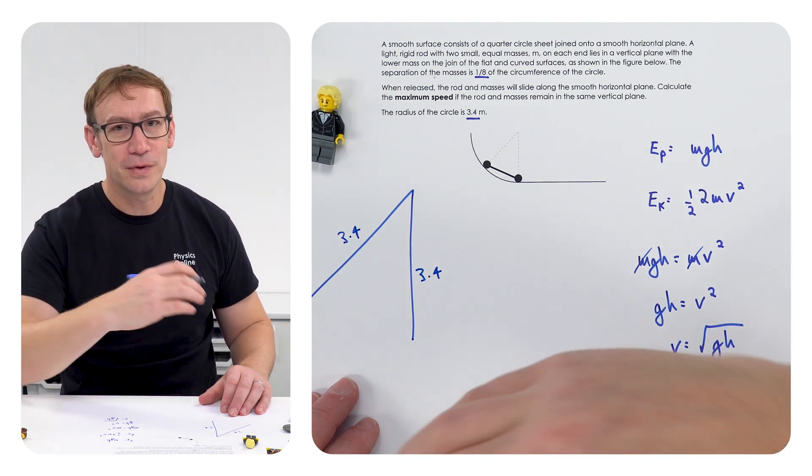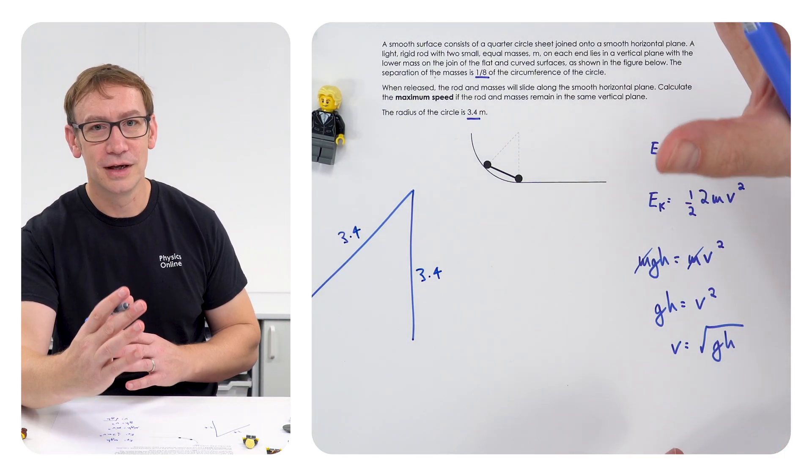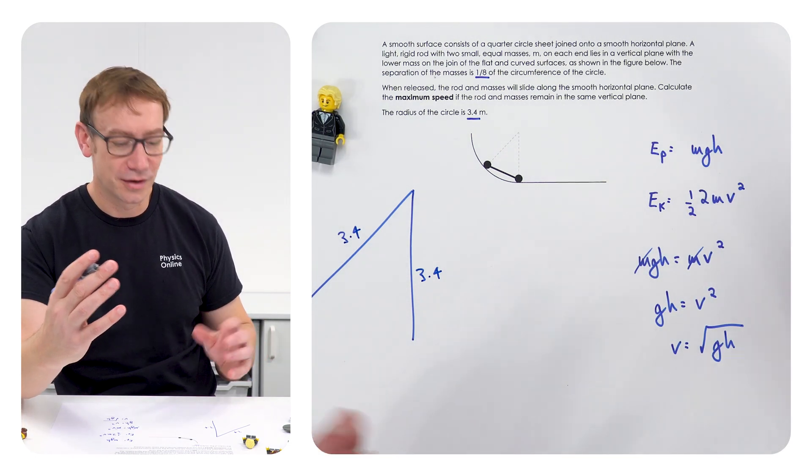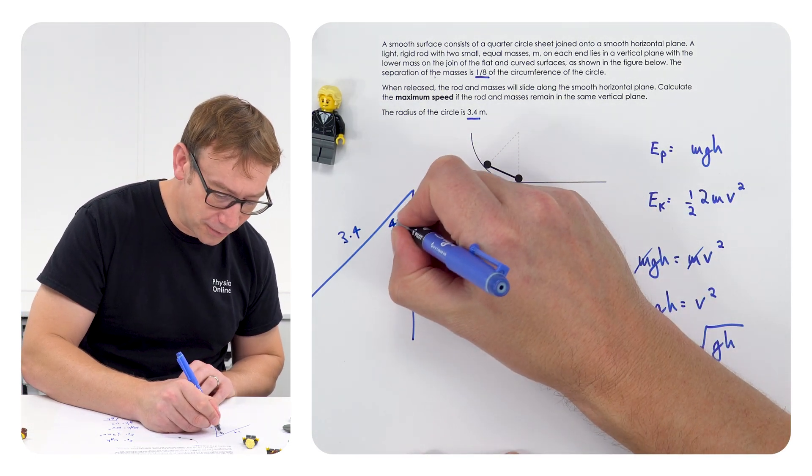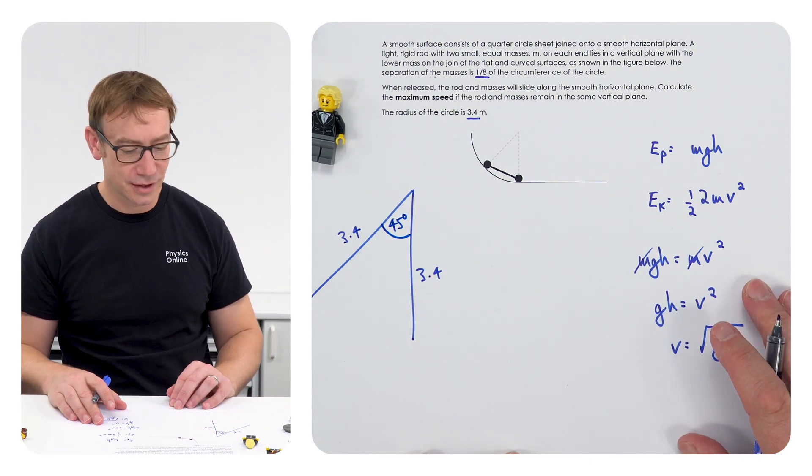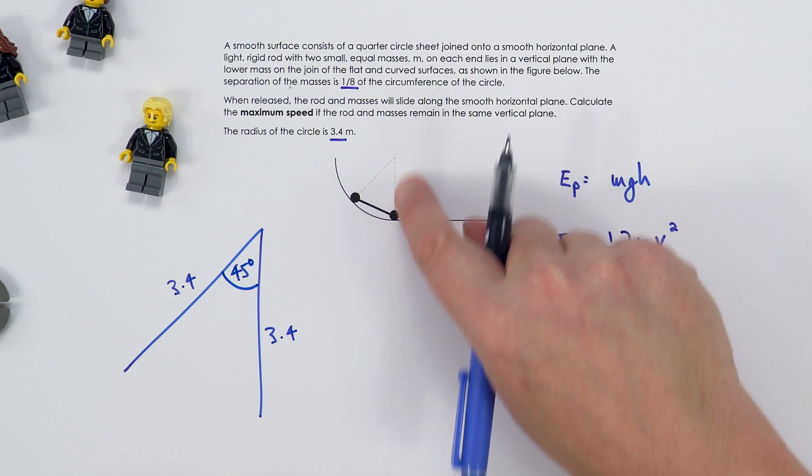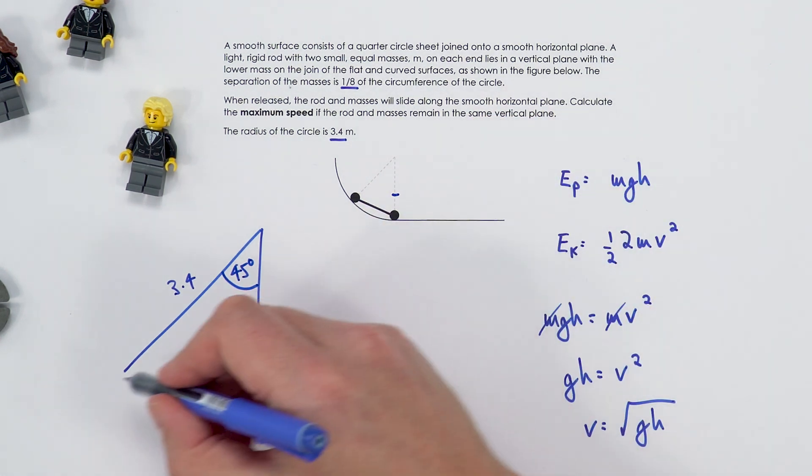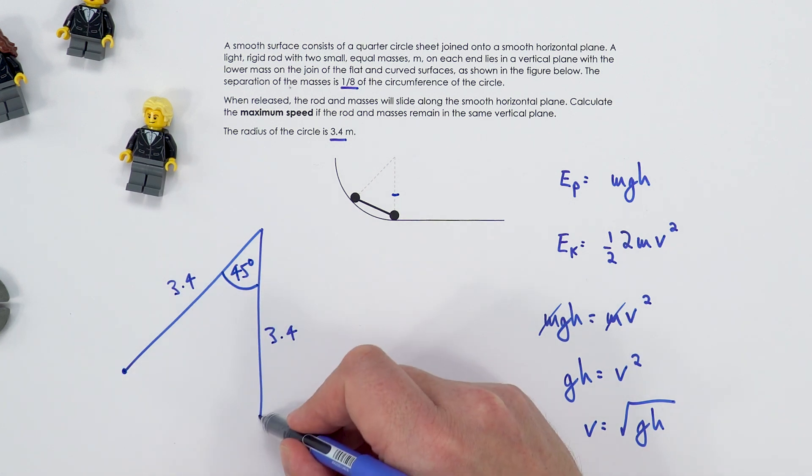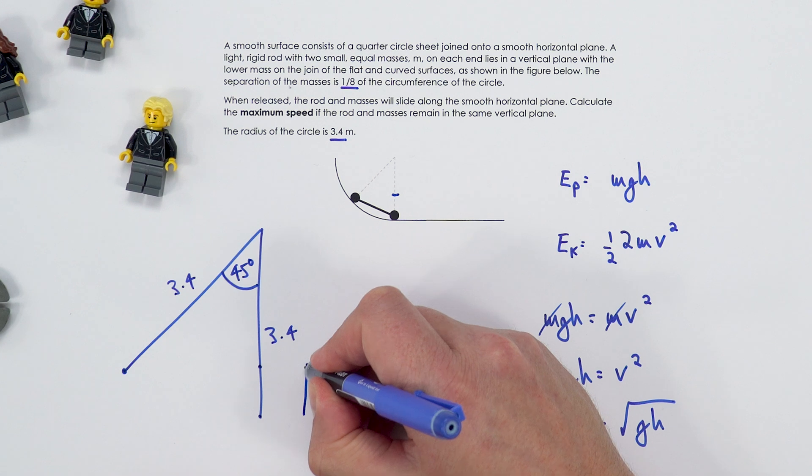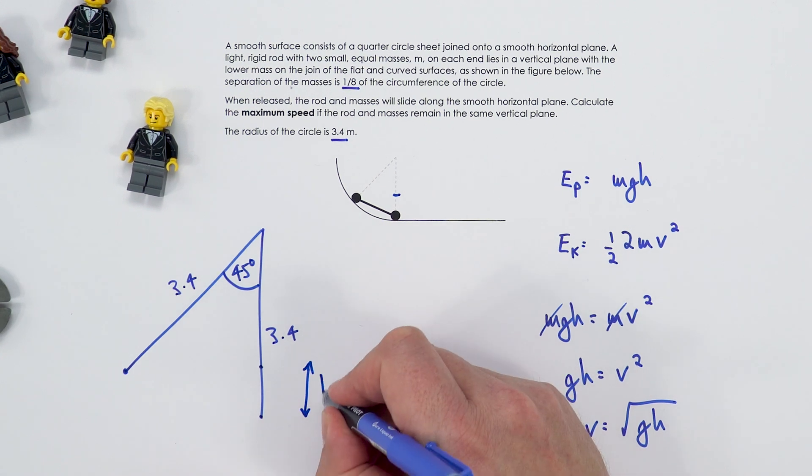We've basically got these parts of that circle where this length here is 3.4 meters and that's 3.4 meters. And if we know this is an eighth of a circle that's going to be an eighth of 360 degrees, so it's just equal to 45 degrees as the angle in there. Okay so that's what we've got in this part of the diagram. But we want to know how much higher this point is than this point down here, and that means we want to know effectively this height here which is h.